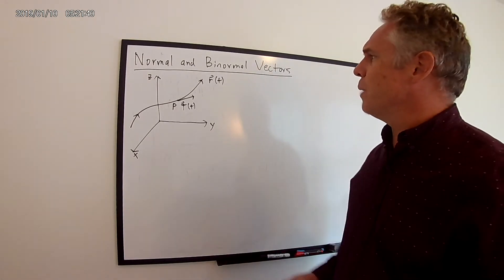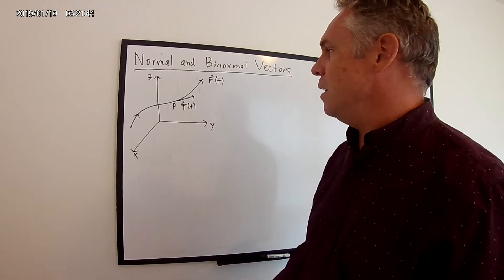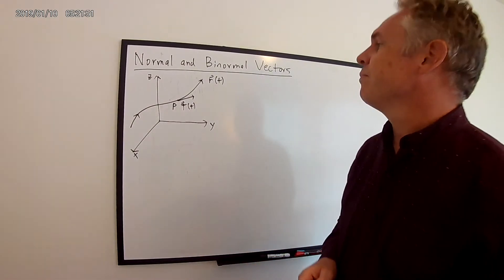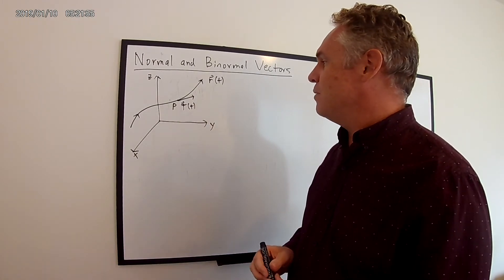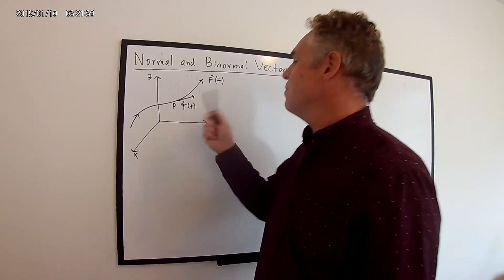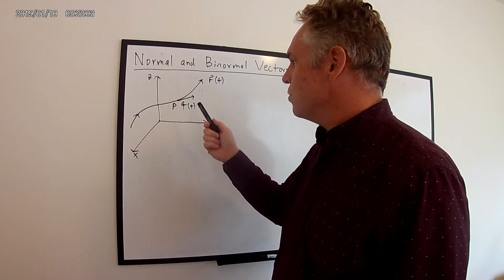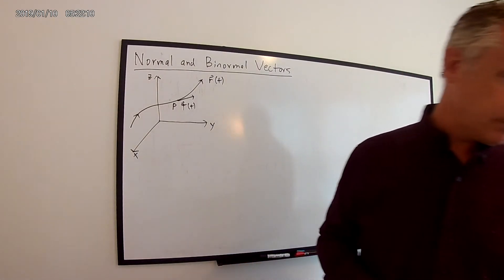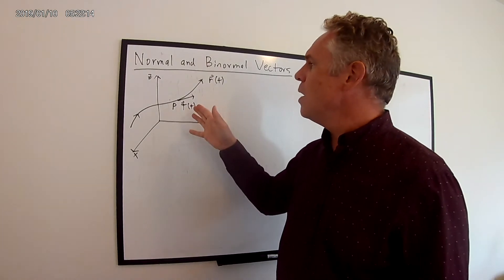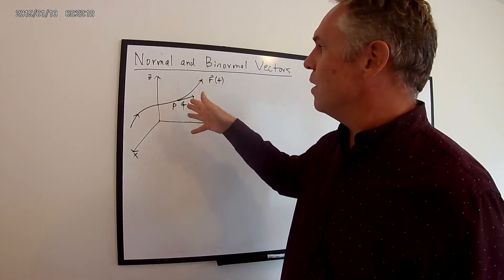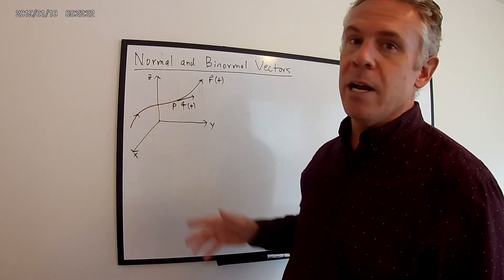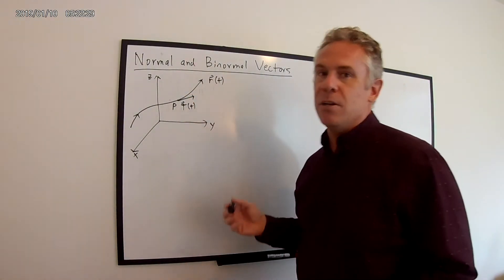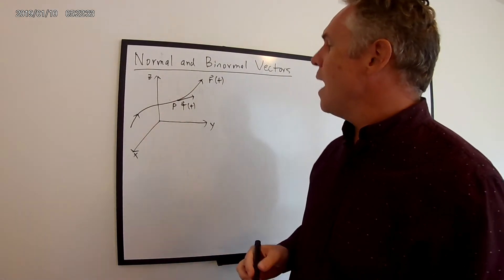Let's talk about the normal and binormal vectors. Imagine we have some space curve R(t) in 3-space, and consider a point along that curve corresponding to parameter t. I've drawn here the unit tangent vector T(t) — this is the vector that is tangent to this space curve at the value of t, and it has a magnitude of 1. Today we're going to look for vectors perpendicular to the unit tangent vector. There are actually an infinite number of such vectors, forming a plane perpendicular to T(t) at that point. We're going to find specifically two of those: the normal and the binormal vector.